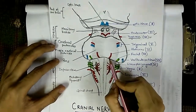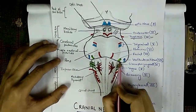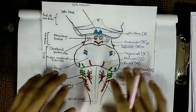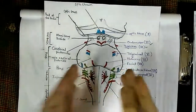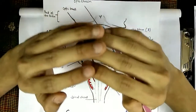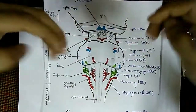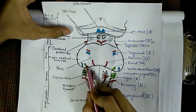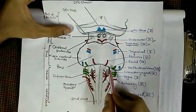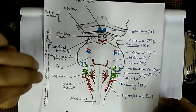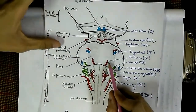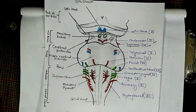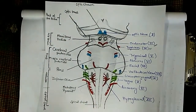At the inferior part of the pons, three pairs of cranial nerves originate: the sixth (abducens), seventh (facial), and eighth (vestibulocochlear). The abducens is positioned more medially, while the vestibulocochlear and facial nerves are more lateral.